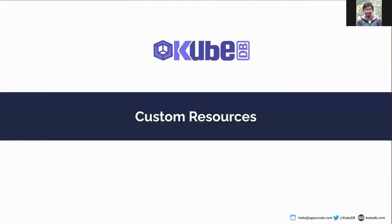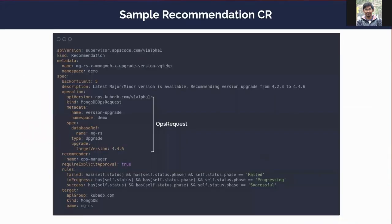Now let's see the custom resources provided by supervisor. First, let's see a sample recommendation custom resource. The recommendation custom resource has API version, kind, metadata, and spec sections like other Kubernetes resources. It is a namespace-scoped object. In the spec section, let's talk about the fields one by one.